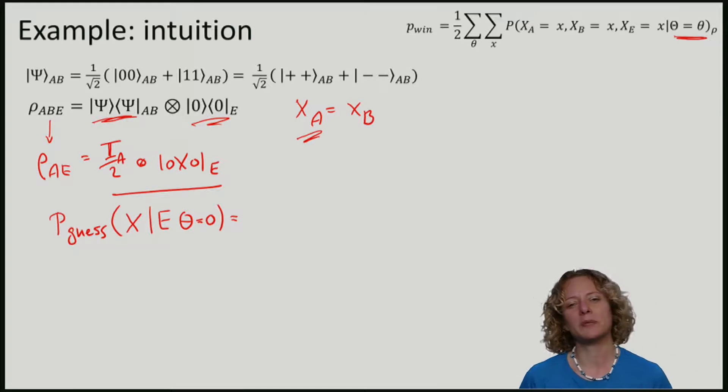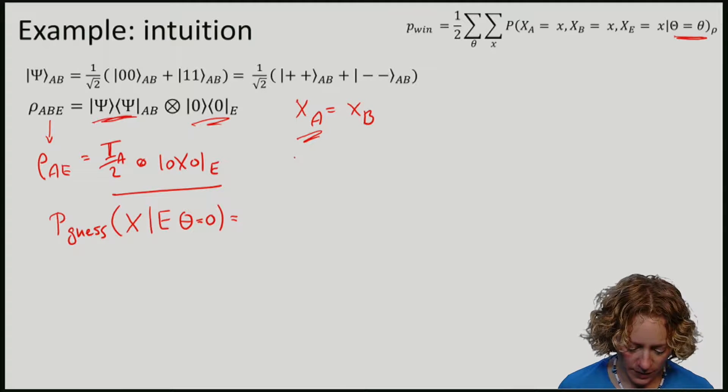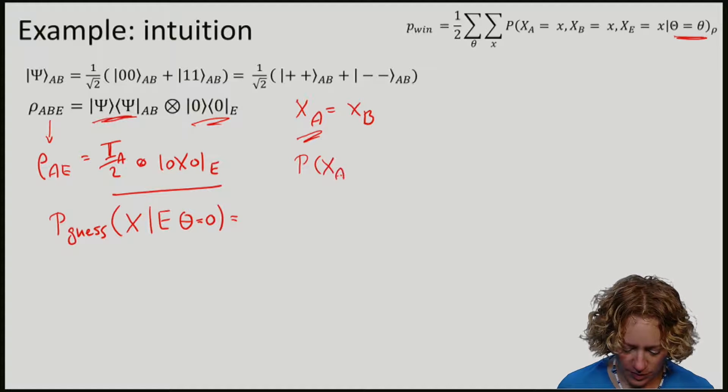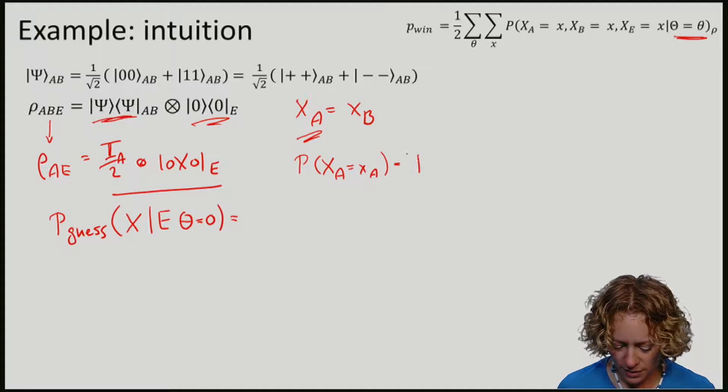So first of all, note that the probabilities that Alice obtains a certain measurement outcome, xa being equal to some outcome, little xa, on the maximally mixed state,